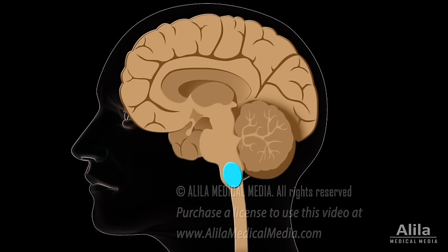The medullary areas also communicate with two other areas in the pons to fine-tune respiration control: the pneumotaxic center, which seems to inhibit inspiration, while the apneustic center stimulates it.